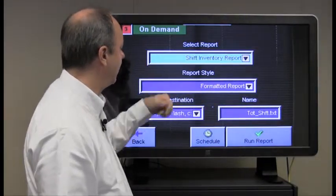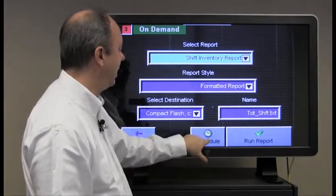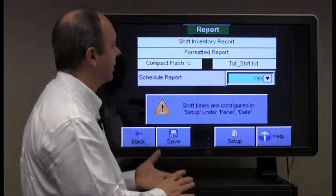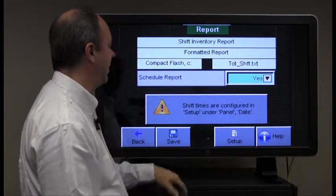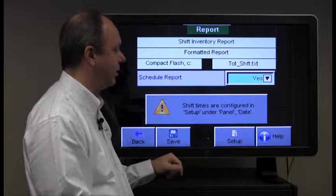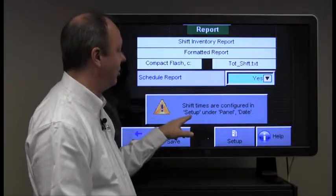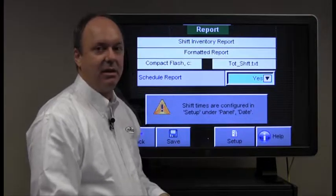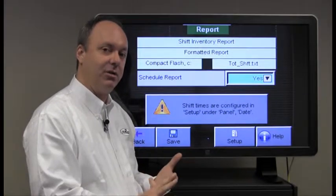We'll leave that we wanted it to be formatted and we'll have it go to the compact flash. And we'll schedule it also since we're talking about scheduling. This particular type of report, since it's shift based, it requires that your shift times be configured in the Blender touch screen. And the way you navigate to that is under the setup menu and then under the panel and under date, you can schedule shift times in there up to three different shifts.